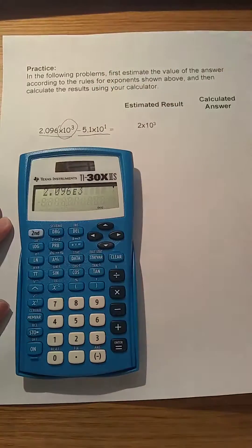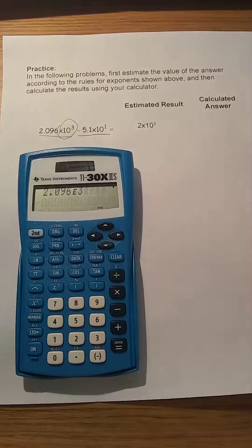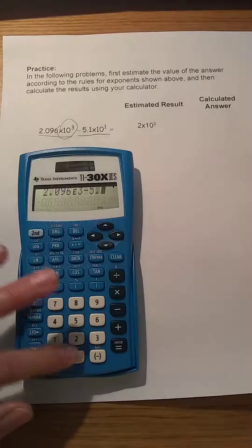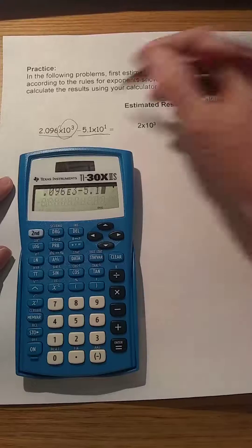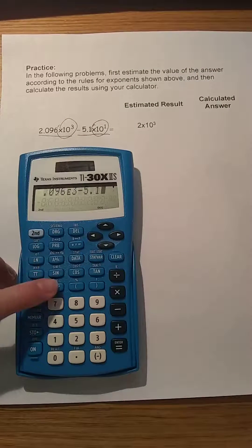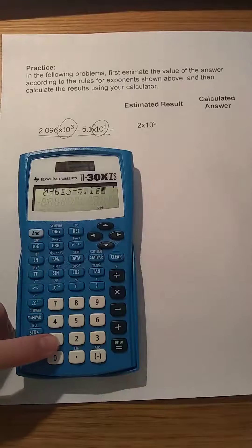Next, we want to subtract 5.1 times 10 to the 1. So we use the minus key, 5.1, and again, to enter the exponent of 10 to the 1, we use second, ee, 1.